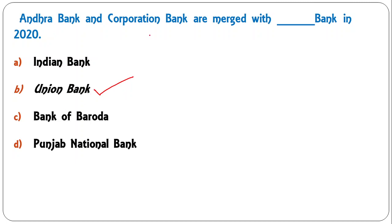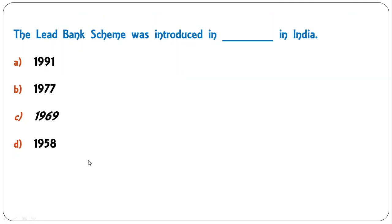The lead bank scheme was introduced in India in which year? Options are 1991, 1977, 1969, or 1958. The correct answer is 1969 — the lead bank scheme was introduced in 1969.